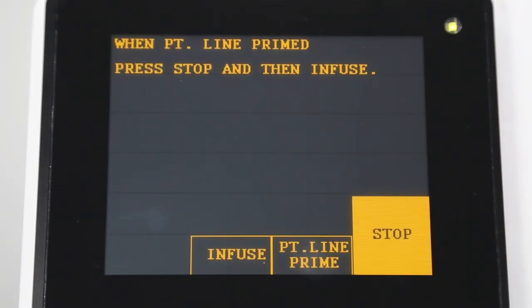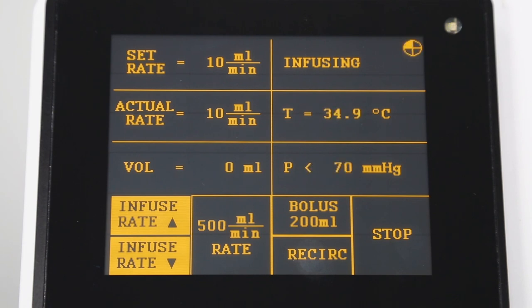Once the system is connected to the patient, press infuse to begin operation. Infusion will automatically start at 10 mL per minute. Infusion rate, set rate, total volume infused, temperature of the fluid, and line pressure are continuously displayed.